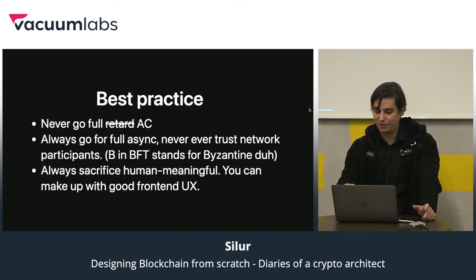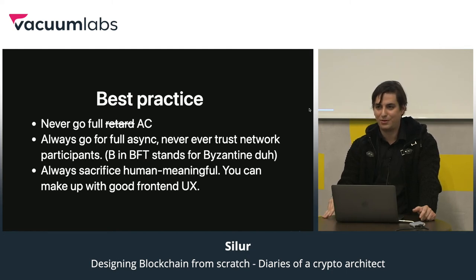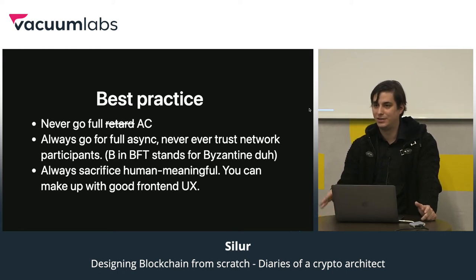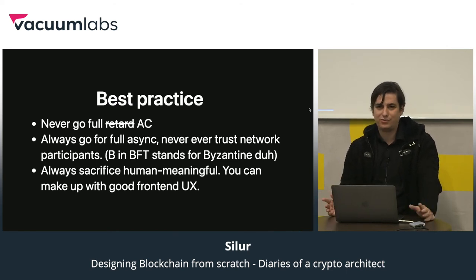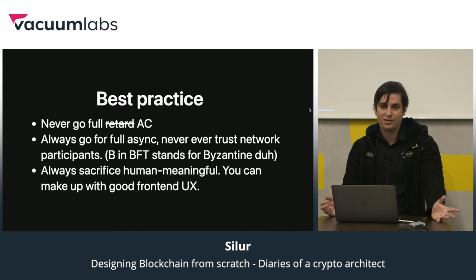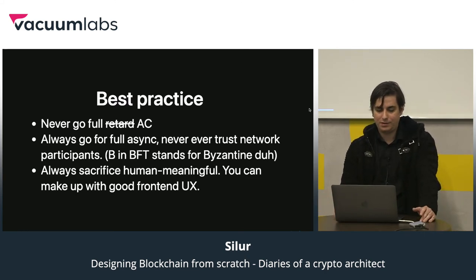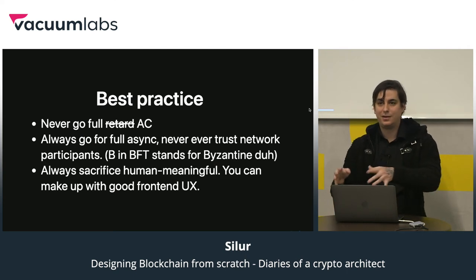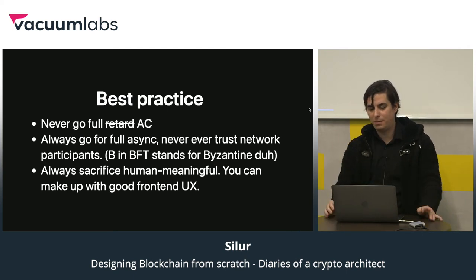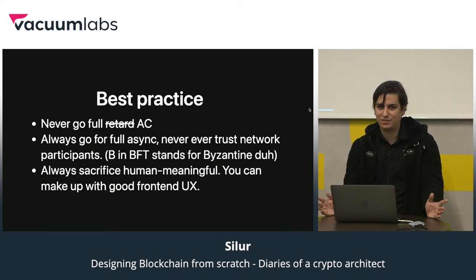Summarizing my best practices on network assumptions: never go fully asynchronous without partition tolerance. Don't let what happened to IOTA happen to you — backed by Microsoft and Bosch, they made an async network with huge numbers that eventually split into two separate networks because they sacrificed the P out of CAP. If you can, always go for full asynchrony; it's really popular especially in proof-of-stake to go for partial synchrony, where messages can be delayed up to some unknown bound.